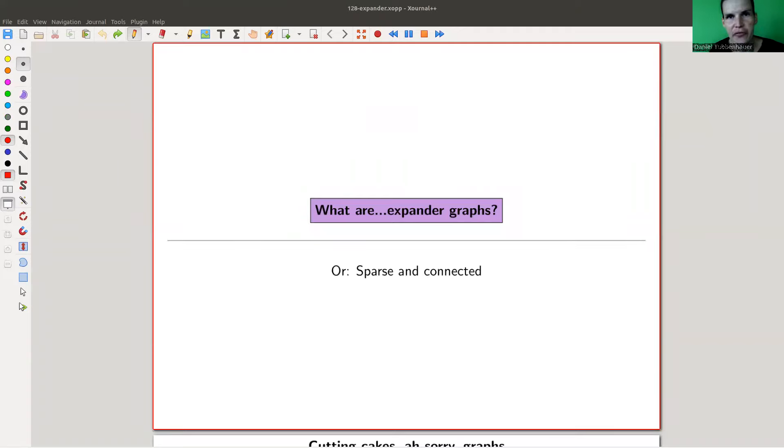Welcome everyone to my continuation of what are my favorite theorems, my very biased collection as usual. Today's theorem is kind of an existence theorem, so a certain type of object called an expander graph or expander graphs, they do exist.